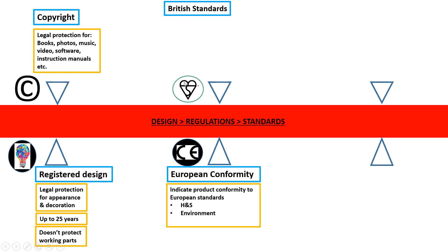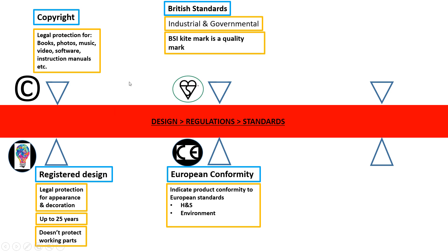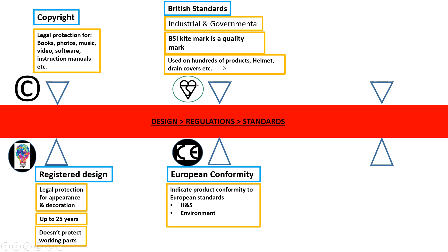British Standards — the way to remember this logo is there's a B on top, an S in the middle, and overall it looks like a love heart. These standards are normally harder to meet than European Conformity. It's an industrial and governmental standard, kite-marked to show quality, and used on hundreds or thousands of products like helmets, drain covers, and even door handles. In public buildings most door handles are standardised to British Standards to ensure they are safe, accessible to people of different heights, and normally rounded to protect people if they fall.